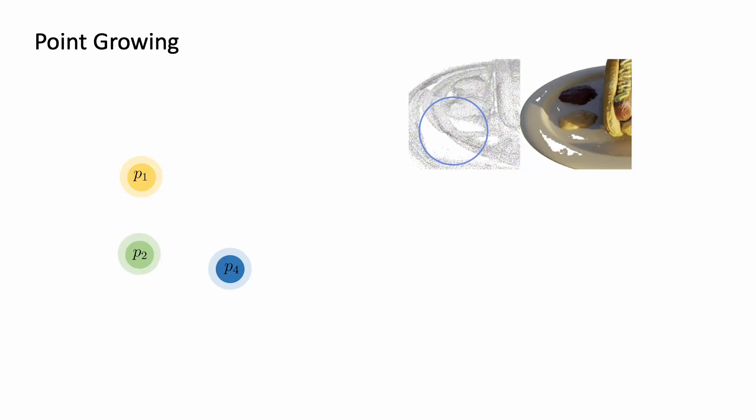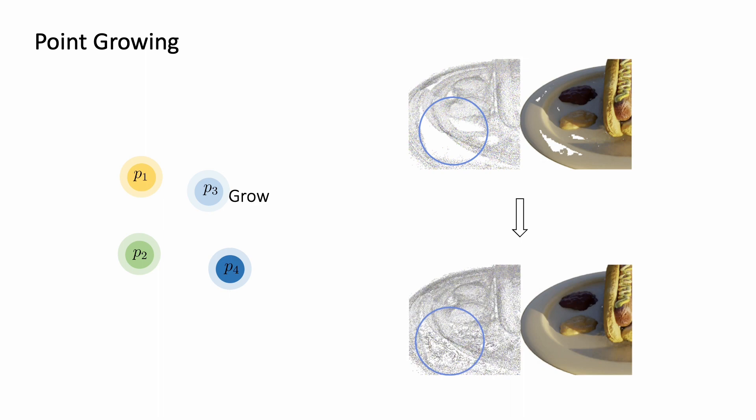Suppose a ray passed through a hole. If our model predicts high volume density at a shading location, and its neural point neighbors are relatively far away from it, we can confidently add a new point at its location. The process can expand the boundary of our point cloud to fill the holes and improve the final results.